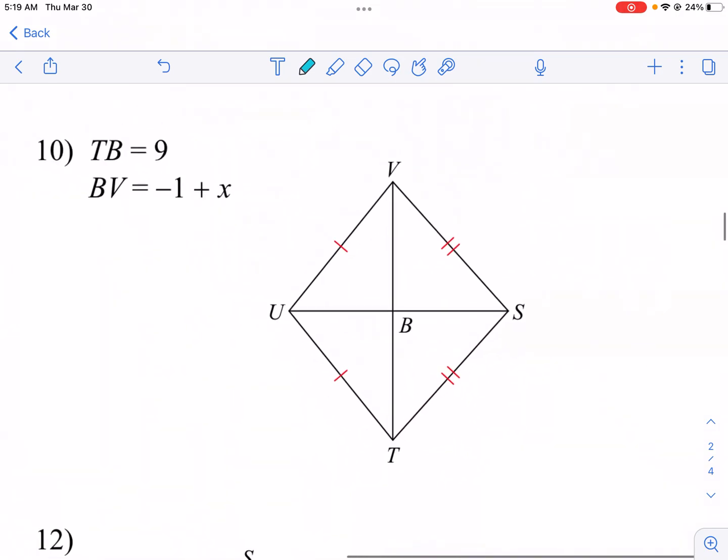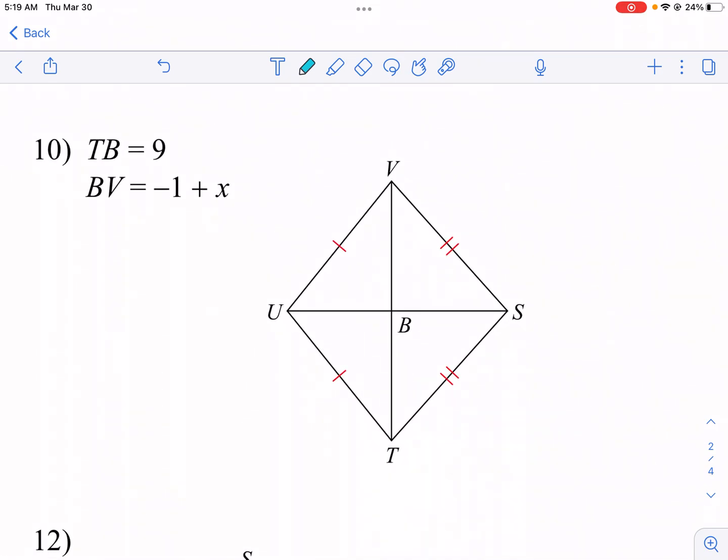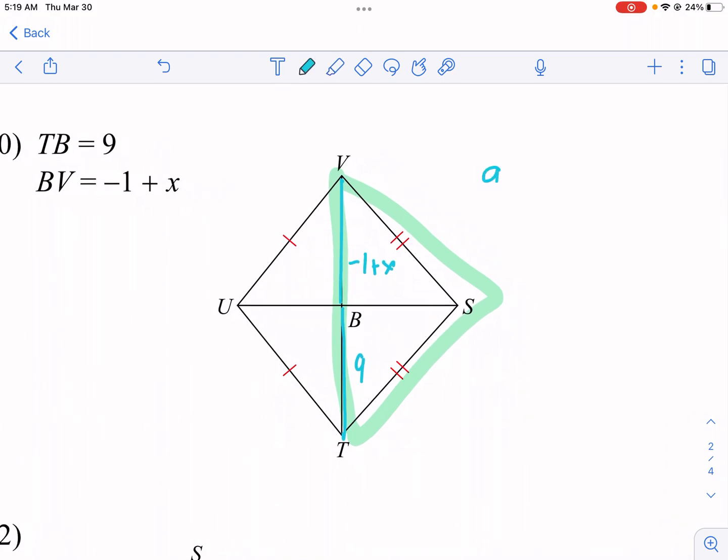Over here, TB, 9, let's see, TB, that is 9. And we're trying to find, and we know that BV equals negative 1 plus x. Again, here's our isosceles triangle. These are going to be a mid-segment. Those are going to be congruent segments right there. Set them equal. 9 equals negative 1 plus x. And we're going to add 1, and we get x equals 10.